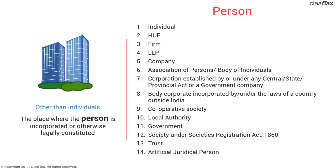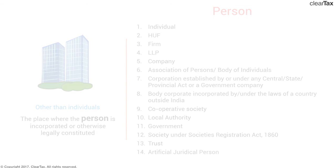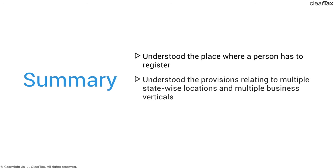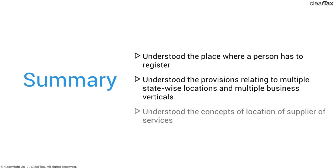You should also know what the term 'person' includes — there are 14 things that a person could include: individual, HUF, firm, LLP, and so on, which is very similar to the definition of person under the direct tax law. That's about it regarding the location of supplier of services. We've come to the end of section 3, where we've understood the place from where a person is supposed to take registration in case of multiple state-wide locations or multiple business verticals, and we've also understood the concept of location of supplier of services. In the next section of module 4, we'll be dealing with the process involved in obtaining registration.